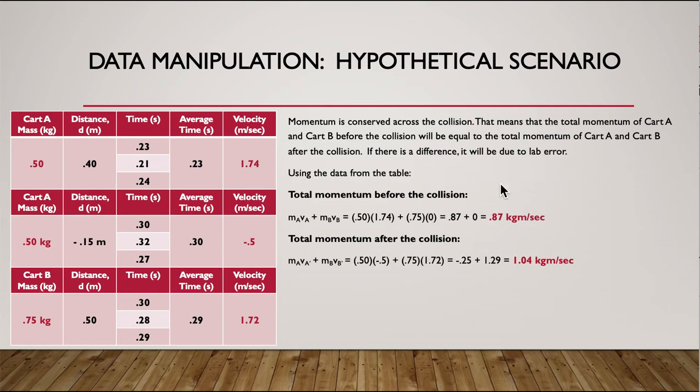These two numbers, theory tells us these two numbers should be the same. In the experiment, they are not. And we don't expect them to be the same, because the experiment's not perfect. So what we have to think about is why are they different? What mistakes did we make along the way?